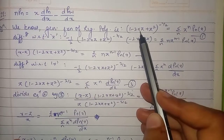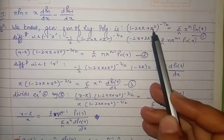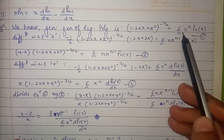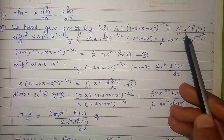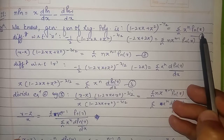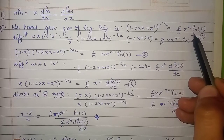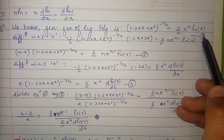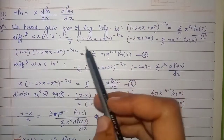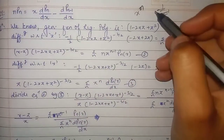We will start from the generating function, which is given by (1 - 2xz + z²)^(-1/2) = Σ z^n · Pn(x). We will consider this as equation number 1 and differentiate it with respect to z.